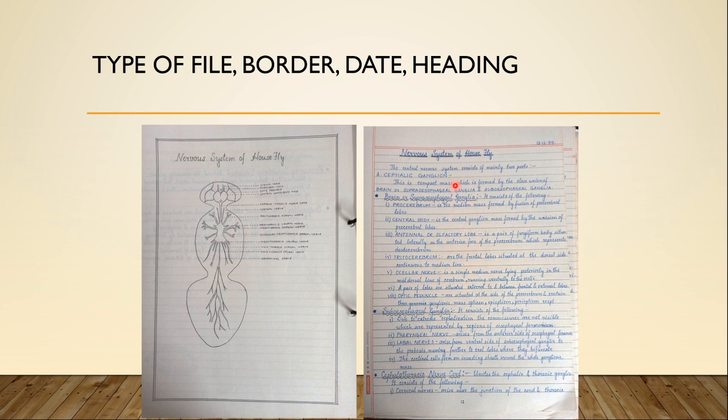On this side, you should always start with the heading as well. If you have subheadings, you can make them under bullet points or emphasize them with black ink. Please remember that on this side you can use only blue or black ink, and on the diagram side you should only use pencils.